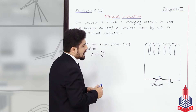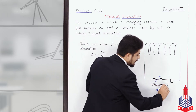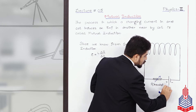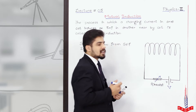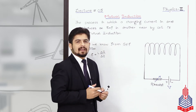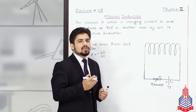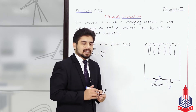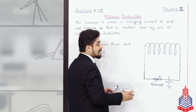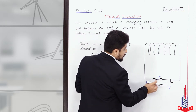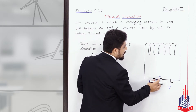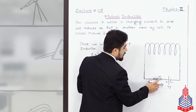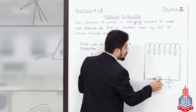We understood that if this is a DC source, by connecting a variable resistor — this arrow represents a rheostat, which is a variable resistor — we can change the resistance value.